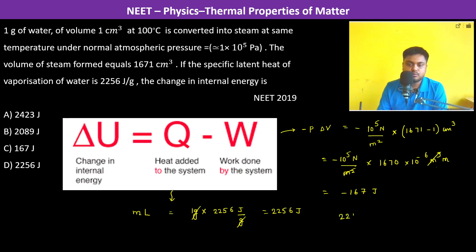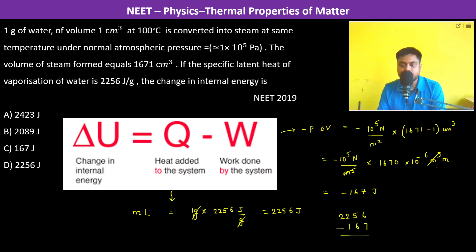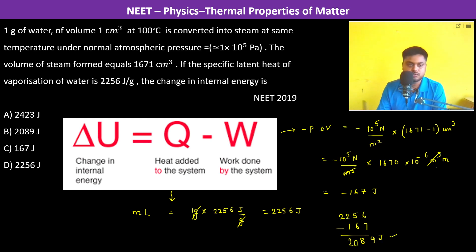Now adding both: 2256 minus 167. Calculating: 6 minus 7 requires borrowing, giving 9; 4 minus 6 gives 8; and 1 minus 1 is 0. So delta U equals 2089 joules. That is the final answer.